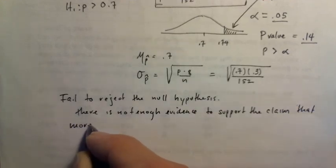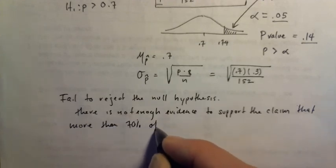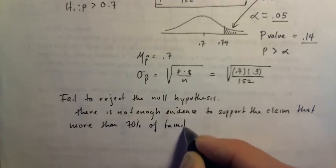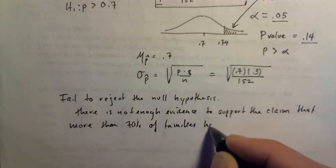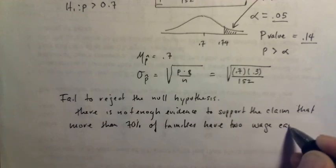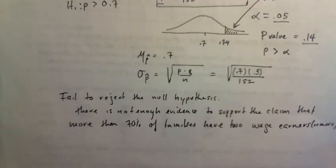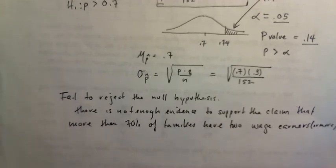...to support the claim that more than 70% of families have two wage earners or more. Okay. That's it. Now we're going to look at it in two other ways.